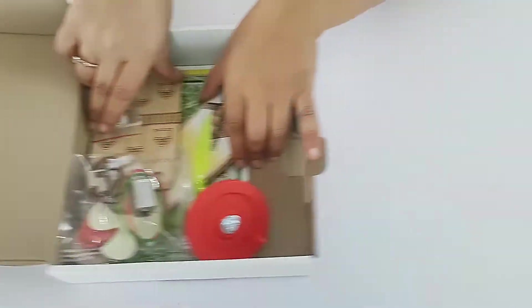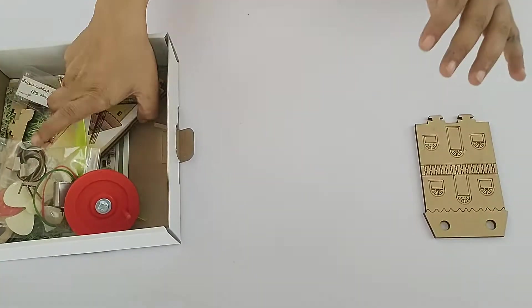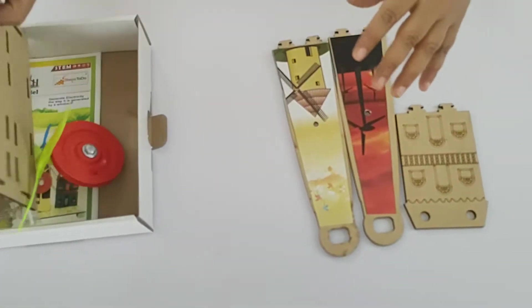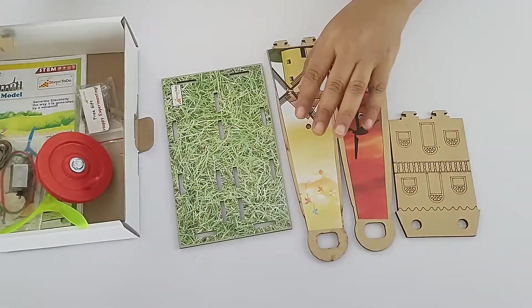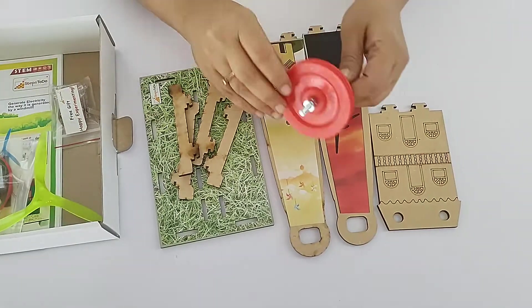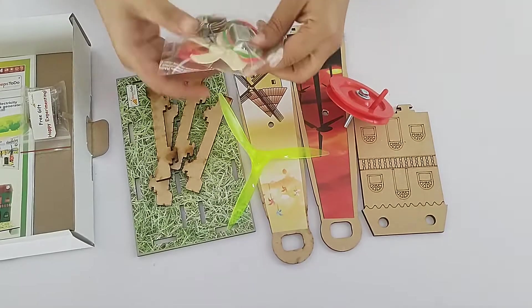Now let's see what all things we are going to get in the box. Here there is a home cutout, these are the two torches, this is a board, cutout, four legs of the board, then pulley with handle, and a three blade fan.